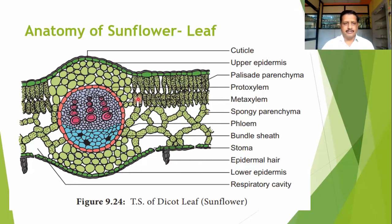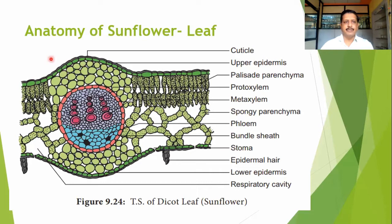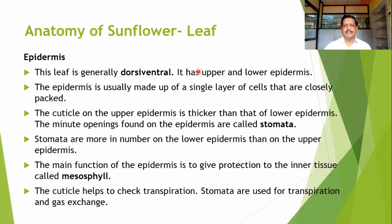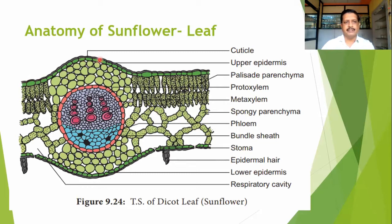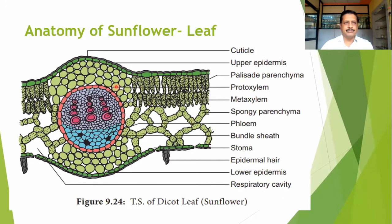You can find here a typical dicot leaf of sunflower. The epidermis is nothing but the outermost layer. This epidermis is dorsi-ventral and has upper and lower epidermis in the dicot leaf. It is usually made up of a single layer of closely packed cells. Dumbbell-shaped cells are present and there are no intercellular spaces. The cuticle on the upper epidermis is thicker than the lower epidermis.